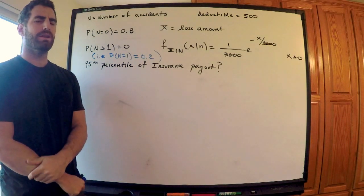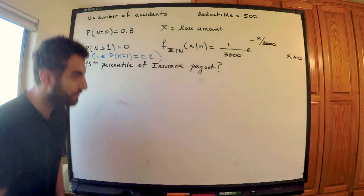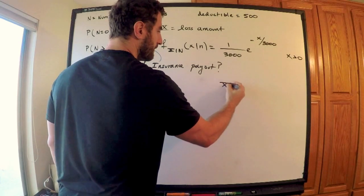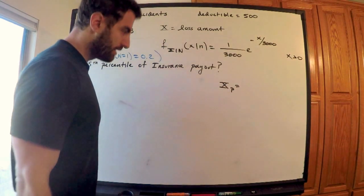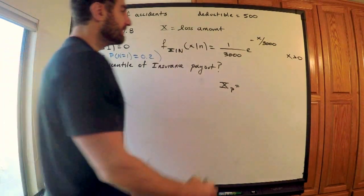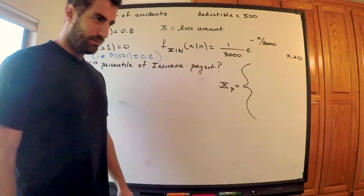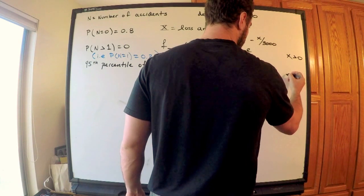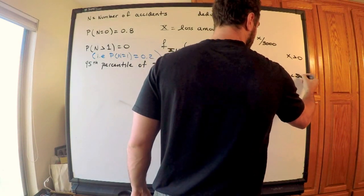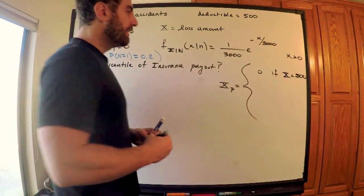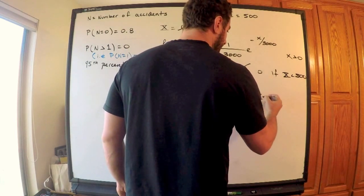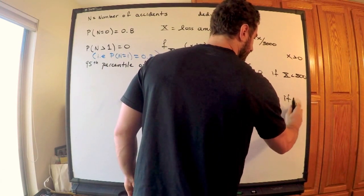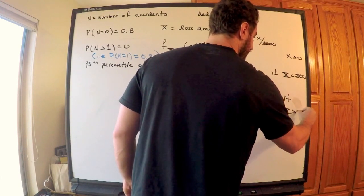Let me write down what the insurance payout is. I'll denote it X_p — the insurance payment. With a deductible of 500, we as the insurance company pay zero if the loss is less than the deductible, and we pay the loss minus the deductible — X minus 500 — if the loss exceeds 500.